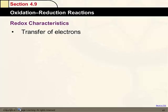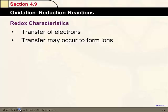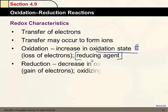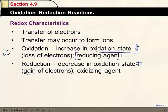In a redox reaction, there is always a transfer of electrons, which may occur to form ions. Oxidation is an increase in oxidation number, and the element that is oxidized is called the reducing agent. Reduction is a decrease in oxidation number with a gain of electrons, and the element that is reduced is called the oxidizing agent. Remember: loss of electrons is oxidation, gain of electrons is reduction.